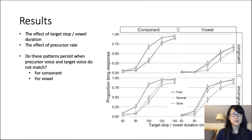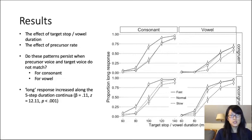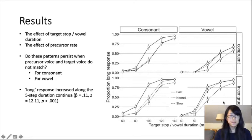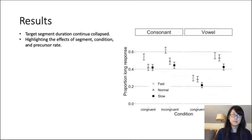Here are the results. Long responses generally increased along the five-step duration continua from short to long — listeners reported hearing a long consonant or long vowel as the duration of the target segment increased. We see differences between the fast, normal, and slow precursor rate lines, and this was observed even in the incongruent conditions where the talker of the precursor phrase and the target word were different, and importantly, even for vowel segments where the contrasts carry reliable talker information.